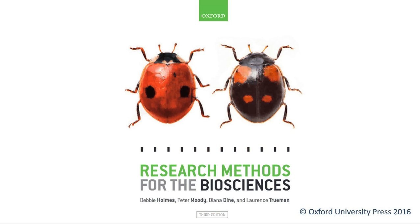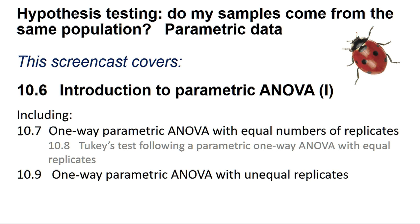Hello, welcome to another Research Methods for the Biosciences screencast for SPSS. This screencast covers Section 10.6 Introduction to Parametric ANOVA, including Section 10.7 One-Way Parametric ANOVA with Equal Numbers of Replicates, Section 10.8 Two Keys Test, and Section 10.9 One-Way Parametric ANOVA with Unequal Replicates.